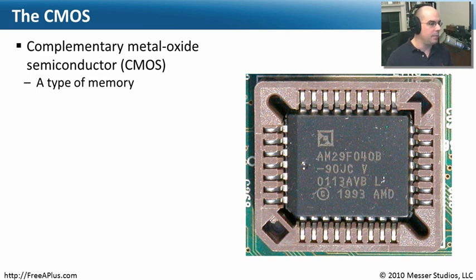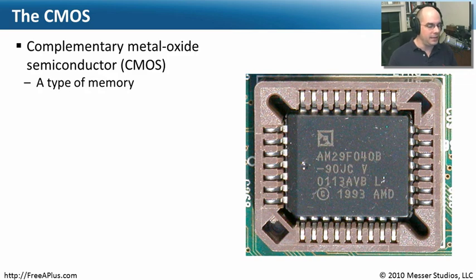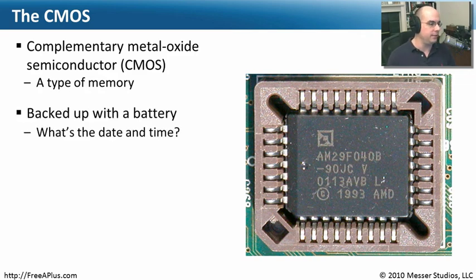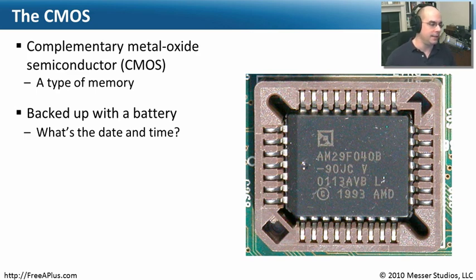CMOS is a Complementary Metal Oxide Semiconductor. The chip itself — where we are storing the BIOS information — is all in this CMOS. We never really call it a Complementary Metal Oxide Semiconductor; you'll always hear it referred to as CMOS, and it's just a type of memory. It's backed up with a battery, so the battery that's on the motherboard is always there to make sure that whatever configuration we have put into our computer is stored and always available.